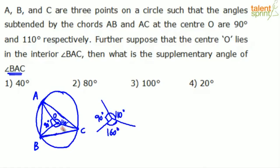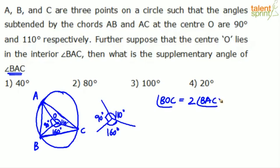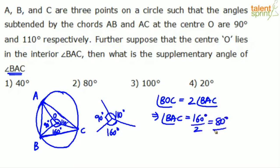The remaining angle BOC should be 360 minus (110 plus 90), which comes out to 160 degrees. We know that the angle subtended by a chord at the center is twice the angle subtended by the same chord at any point on the circle. So angle BOC equals twice angle BAC. Since angle BOC is 160 degrees, angle BAC equals 160 divided by 2, which is 80 degrees.